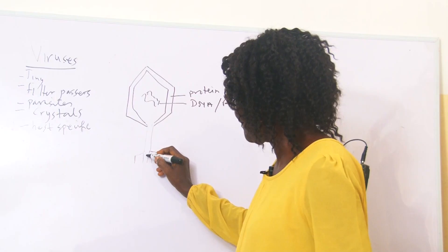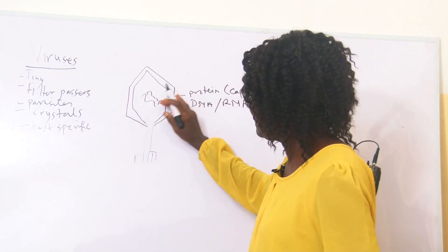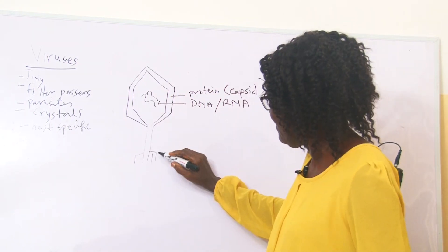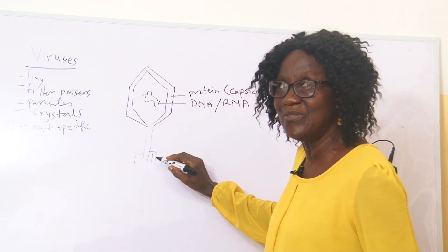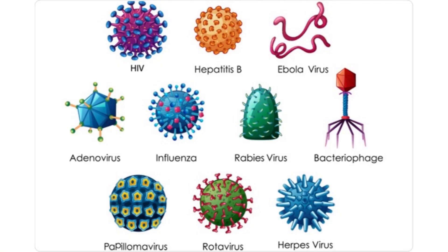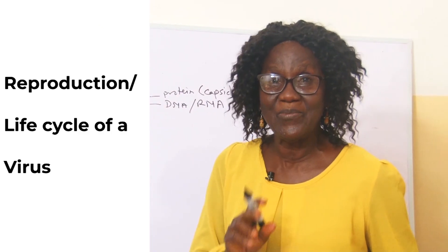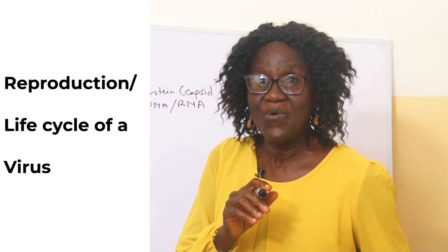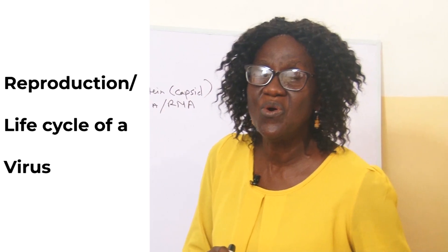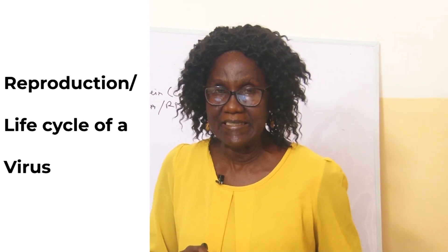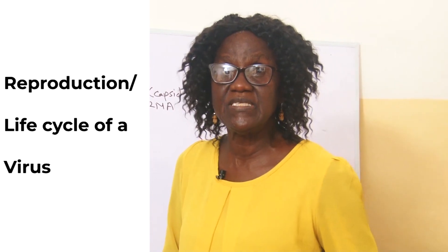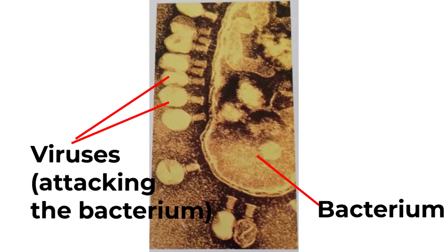Viruses have all kinds of structures. They have structures on them to be able to attach onto the host. Look at all the different structures on their body — just so that they can stick to the host and attack it. Let's look at the reproduction and life cycle, and then we will understand why they are so difficult and bad. We will use the bacteriophage attacking the bacterium.